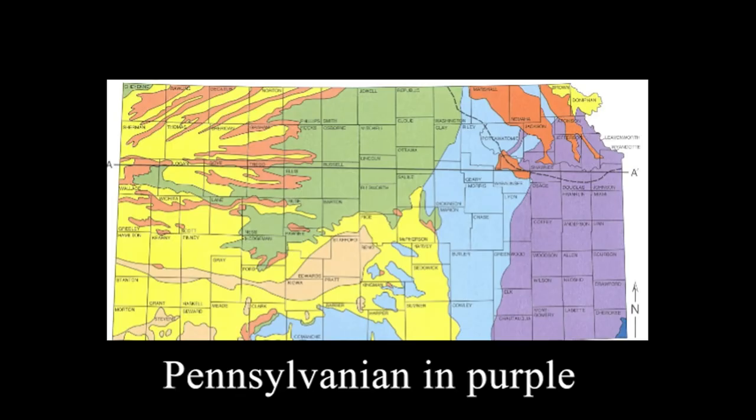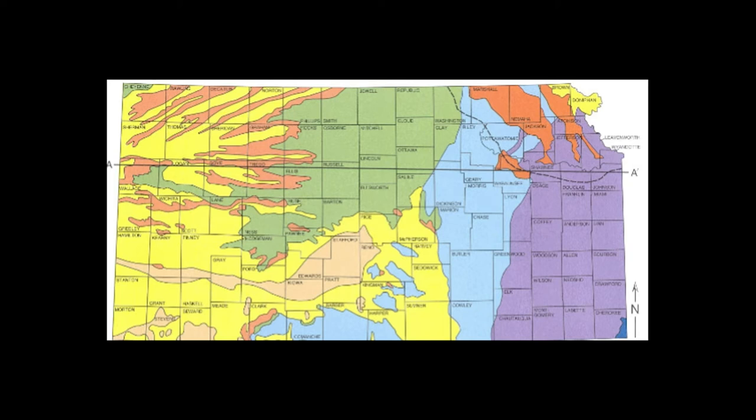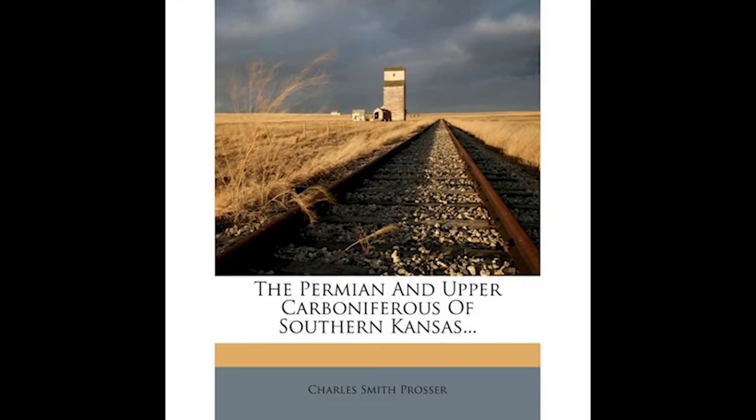Eastern Kansas carries many Pennsylvanian-era fossils. While most of western Kansas was still underwater, a small sliver in eastern Kansas became a shoreline and developed swamps. Kansas's coastlines changed constantly under rising and falling seas, even aside from this major sea level drop. Most of the time, though, Kansas was underwater — a lot of water.